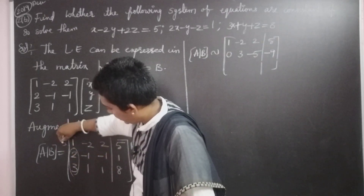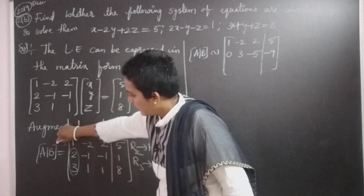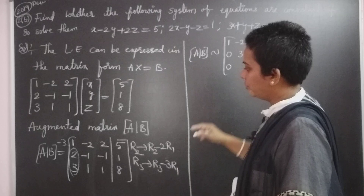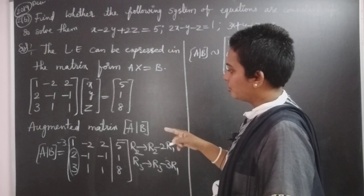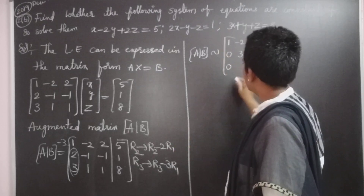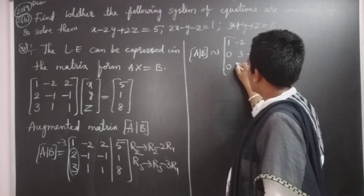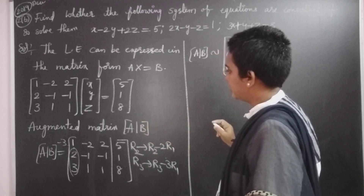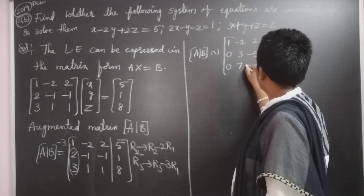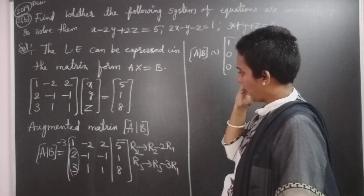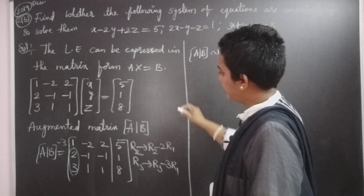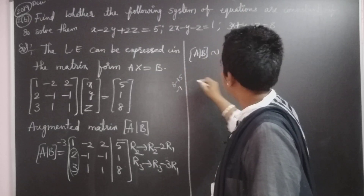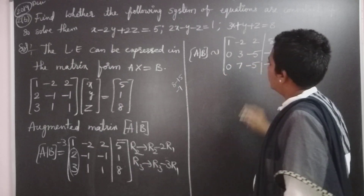For the third row, eliminating the first element using R3 = R3 − 3R1: 3 minus 3 gives 0; 1 plus 6 gives 7; 1 minus 6 gives −5; 8 minus 15 gives −7. So the third row is 0, 7, −5, −7.